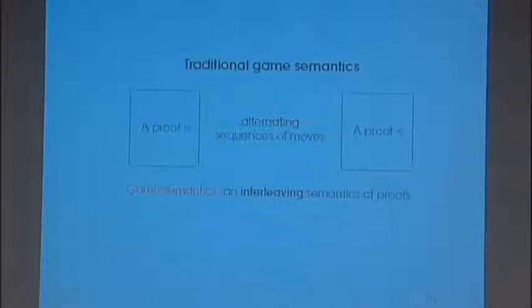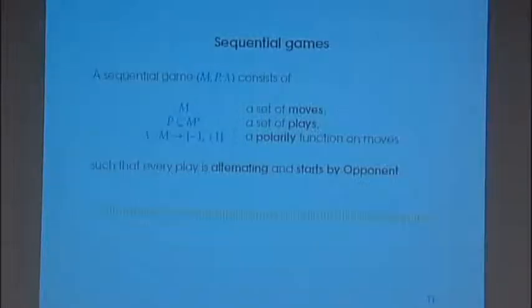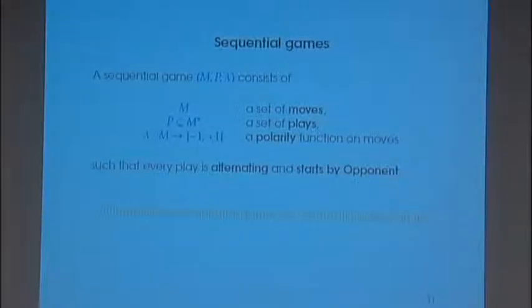We said that's the general principle, but now let's see how it works really on a given model, a concrete model. This model is given by sequential games. A sequential game is simply a decision tree where every branch is alternating and opponent starts.